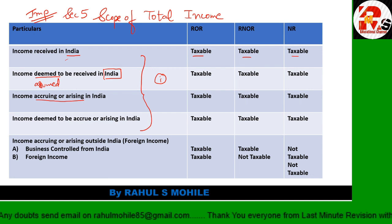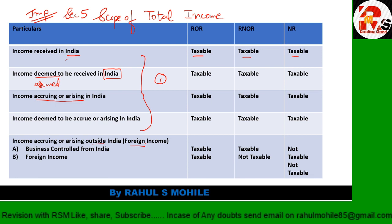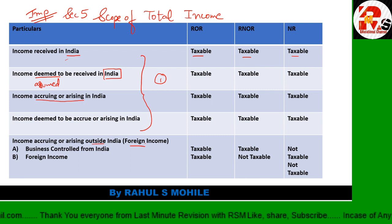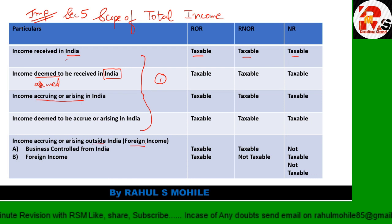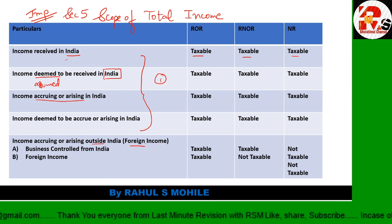Income deemed to be accrued or arising in India follows the same thumb rule. Rule Number 1: if income is India-related in any way - received in India, accrued in India, deemed received or deemed accrued in India - then it is taxable for all three persons: Resident and Ordinary Resident, Resident But Not Ordinary Resident, and Non-Resident. You write the amount in all three columns. Rule Number 2 covers foreign income - income accruing and arising outside India.